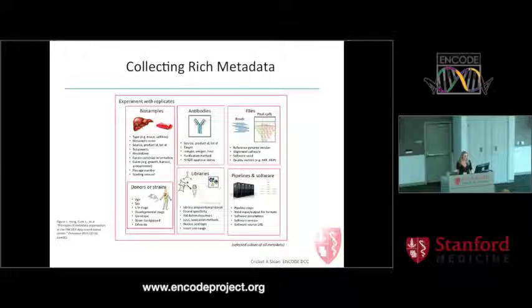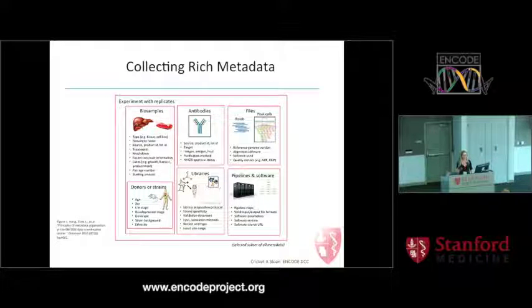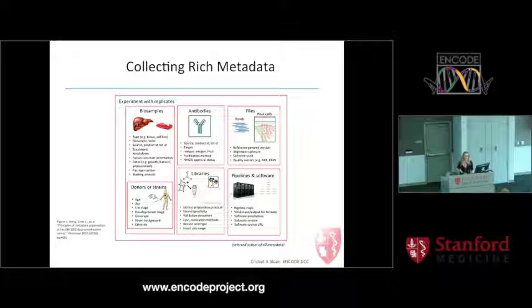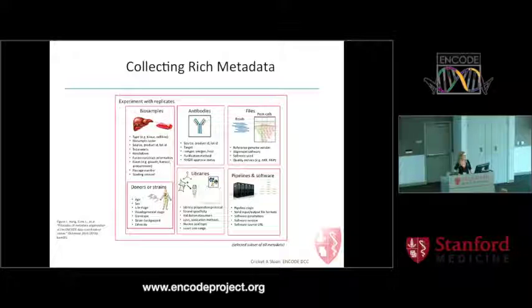One of our goals is to collect very rich metadata. We collect metadata on biosamples, antibodies, files themselves, software and pipelines, the libraries created as input to ChIP-seq or RNA-seq experiments, and on the donors or strains. You'll note in our system we originally thought of human, so mouse strains are called mouse donors — I think of them signing off on their consent forms.